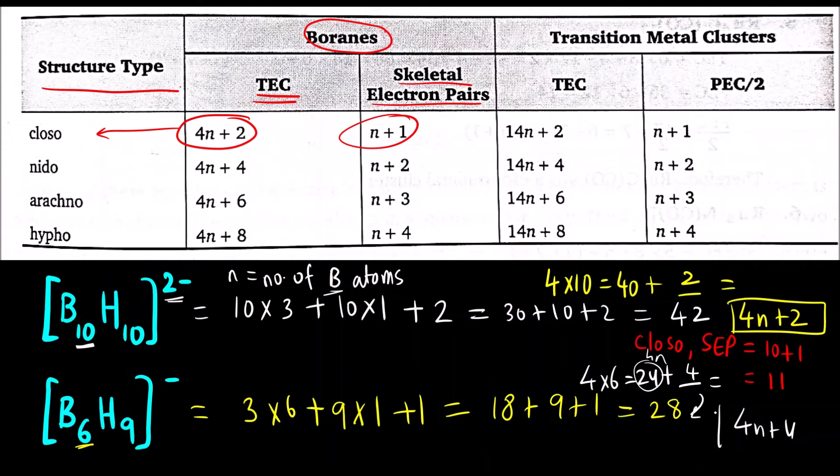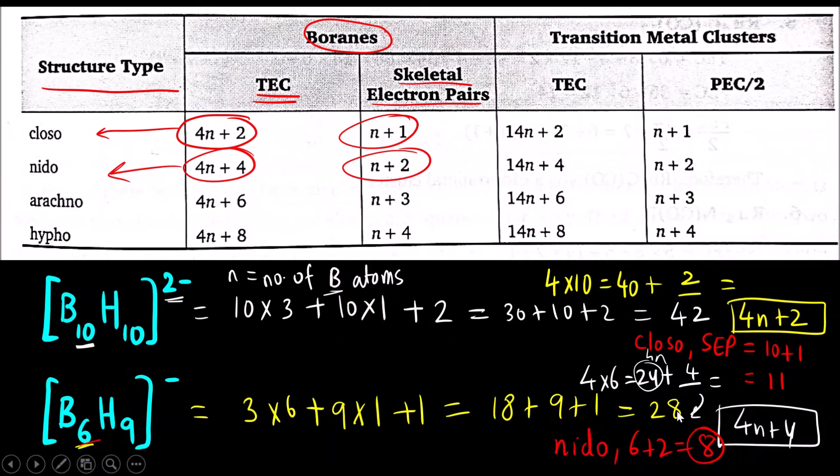You can see it from the table, it is Nido. This is going to be Nido and skeletal electron pair is N plus 2. N is 6, so 6 plus 2 that will be 8. 8 is the skeletal electron pair. Nido and 8. You can see first option it is 8 and Nido. So what is the correct answer? Option 1.